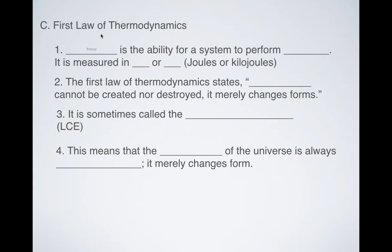So what's the first law state? Well, first, let's define energy. So energy is the ability for a system to perform work, and it's measured in joules or kilojoules. So joule is kind of the official unit of energy. And so kilojoules is just a thousand joules. Kilo, kilo, meaning a thousand.